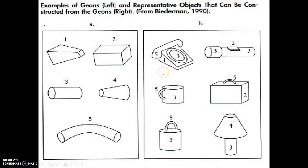The idea behind geons is that to figure out what an object is, you have to identify the different geons that make it up. For example: a pyramid sliced on top, a rectangle, a cylinder, a cone with its top locked up, and a tube. You can see how these geons can be combined and recombined to create any potential object we can see.